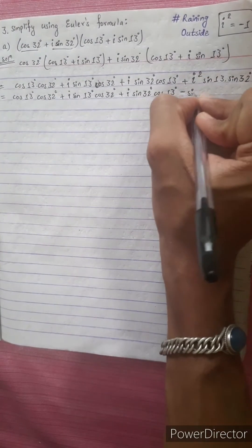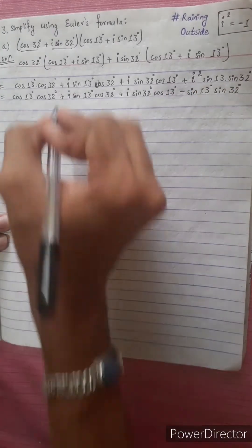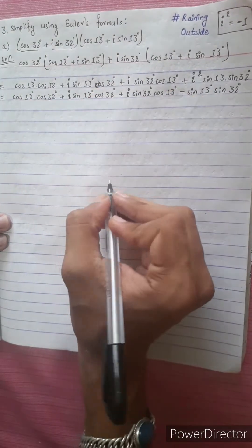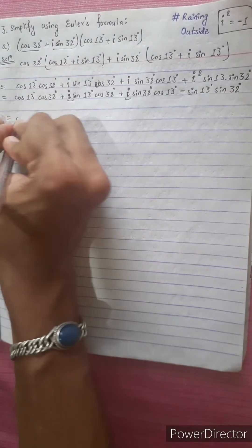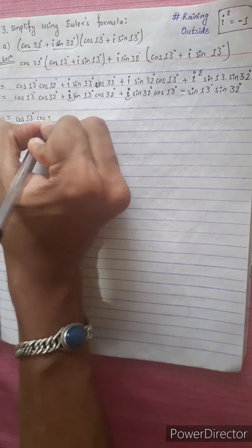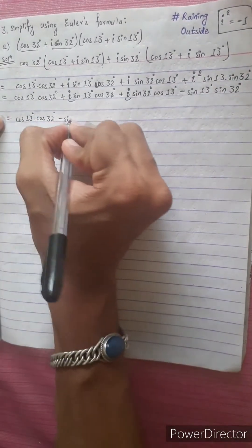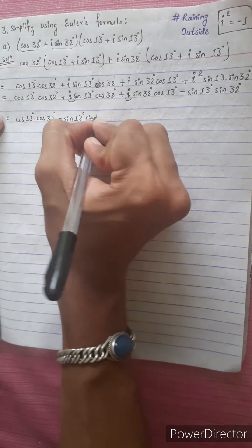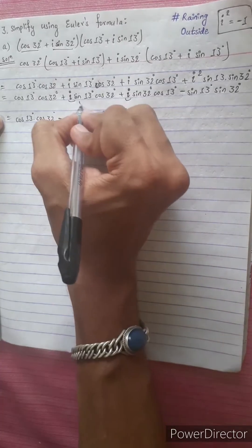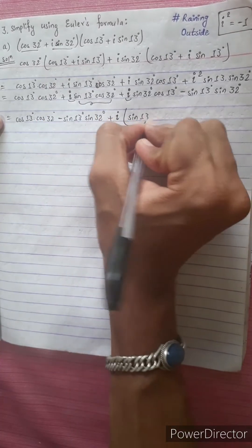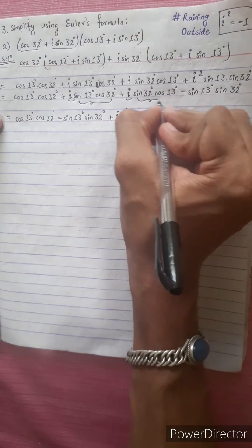Minus sin 13 · sin 32. अब यह निरा I वाला I common लिन्छौं — I common लिएपछि अब बाँकिरा sin 13 cos 32 plus...